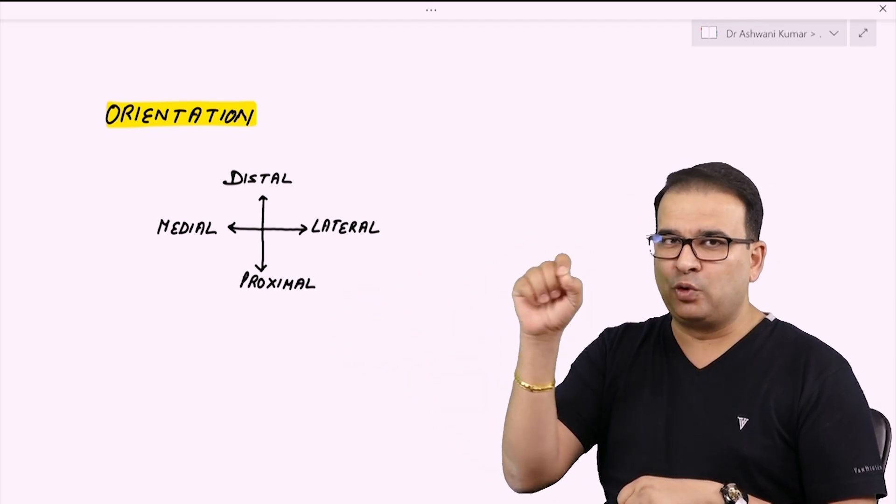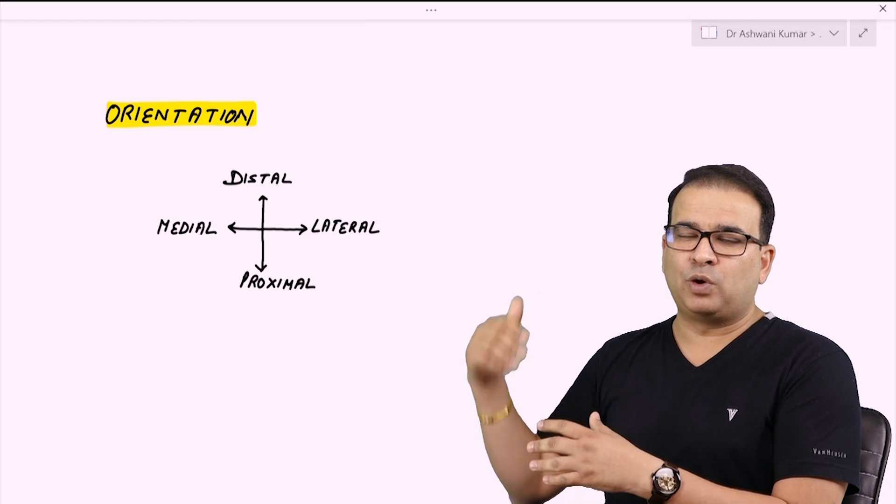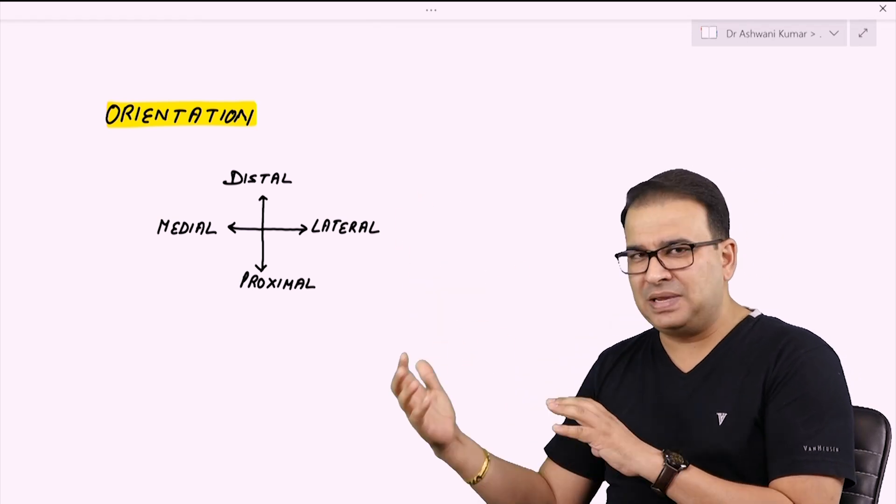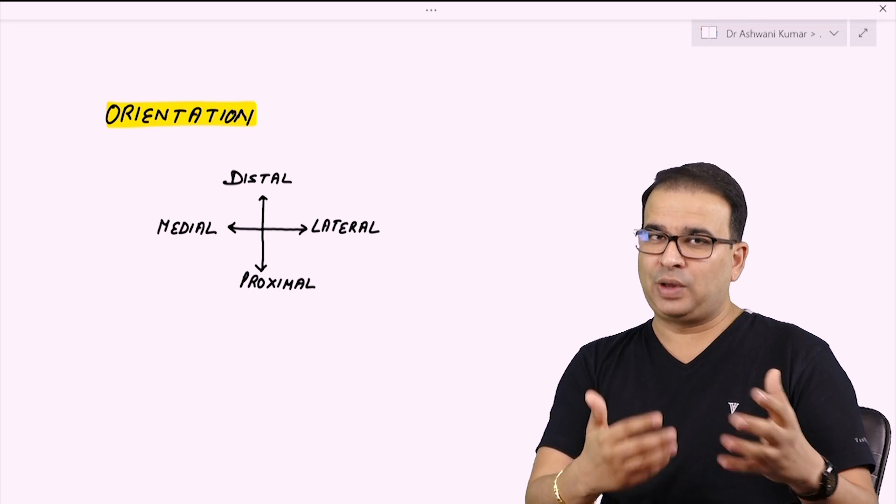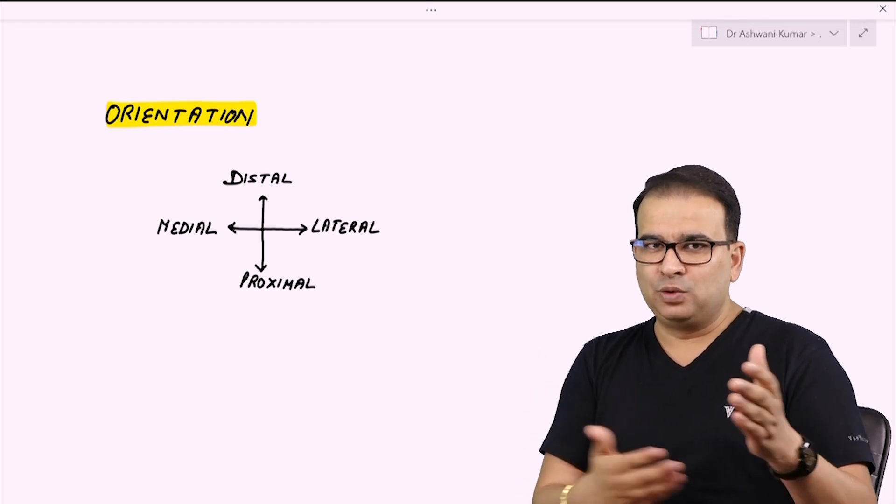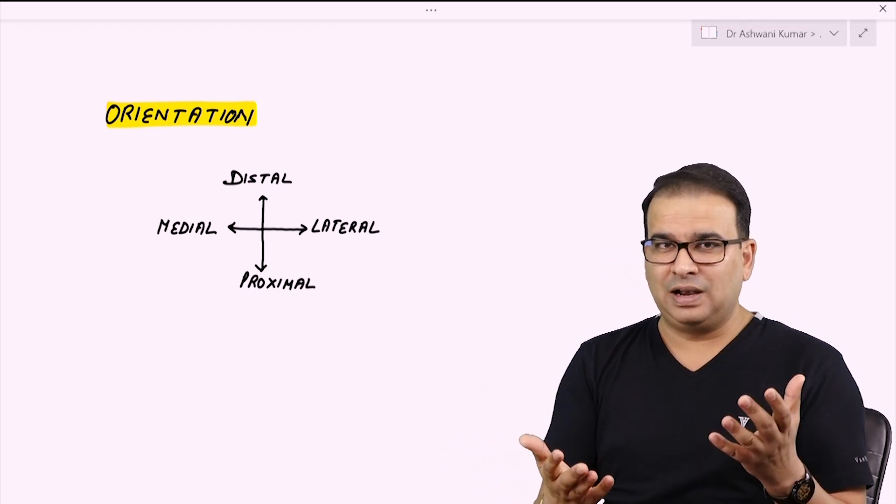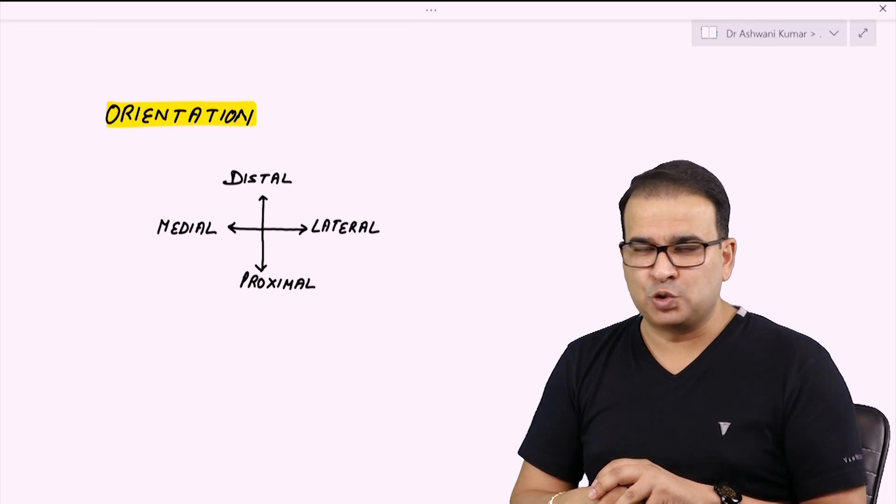With every single diagram, you should draw the four lines here and tell about the diagram what is proximal, what is distal, what is medial, what is lateral. This will create an impression on the examiner's head that this guy knows about how this orientation is, whether it is right side or left side and what exactly he wants to show it in.